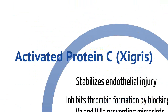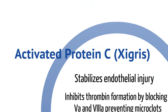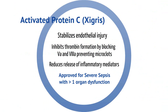The next important drug is activated protein C, otherwise known as Xigris. Activated protein C stabilizes endothelial injury and inhibits thrombin formation by blocking factors 5A and 8A, preventing microclots from forming. It also reduces the release of inflammatory mediators. Xigris should only be used in patients with severe sepsis that have greater than one organ dysfunction. Studies have shown that patients with severe sepsis with only one organ dysfunction actually have increased morbidity with the use of Xigris.